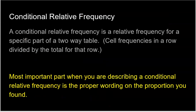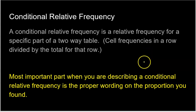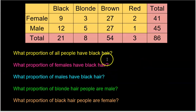Next, we have conditional relative frequencies. A conditional relative frequency is a relative frequency for a specific part of a two-way table. Remember, relative means proportions — this is a proportion or percentage, but a very specific one. The most important thing is using proper wording to describe which proportion you are trying to find.